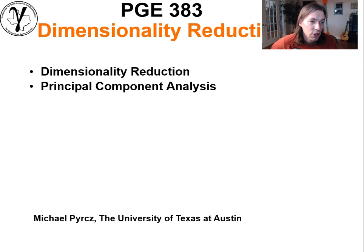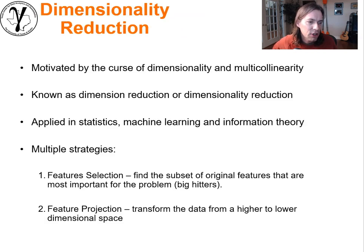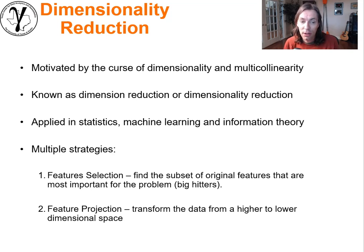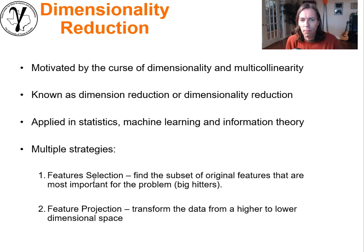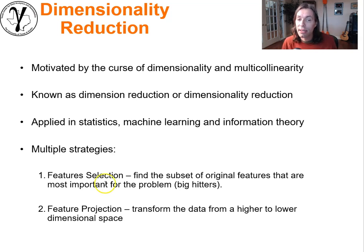Now, about methods for dimensionality reduction, and then we'll get into principal components specifically. Dimensionality reduction is motivated by the curse of dimensionality and multicollinearity, and it's applied in statistics, machine learning, and information theory. There are multiple strategies. The first is simply picking the best features to work with — finding a subset of the original features most important for the problem. Feature projection is different: you transform the data from a higher to a lower dimensional space.